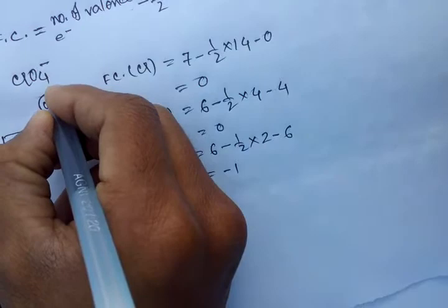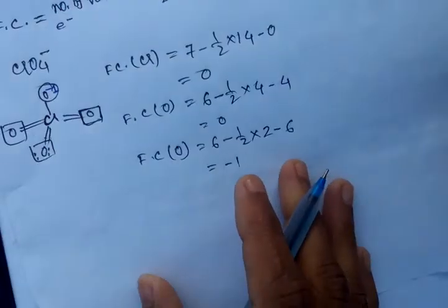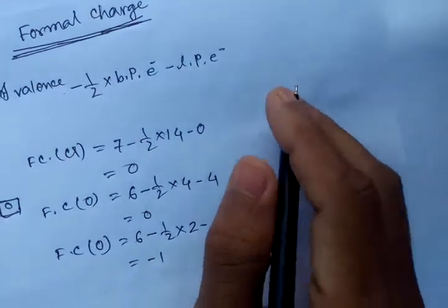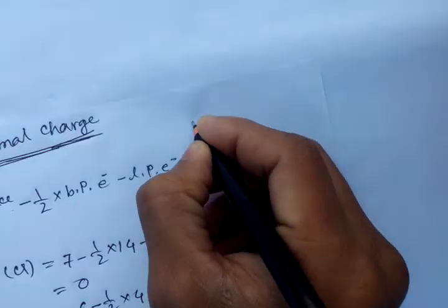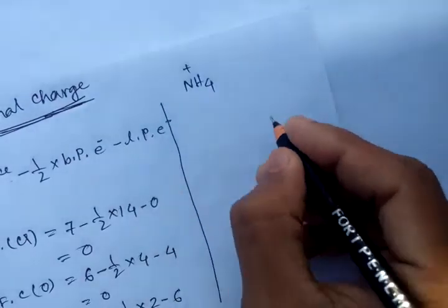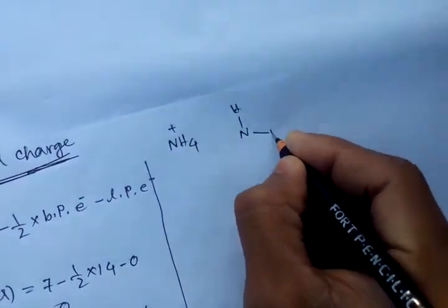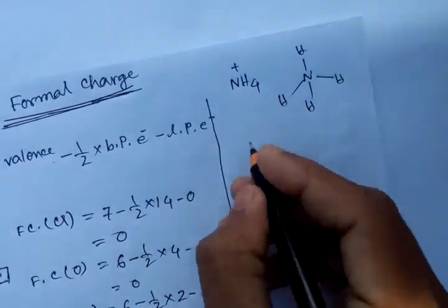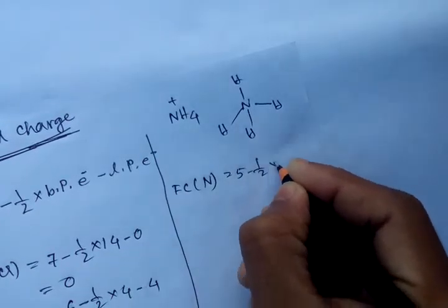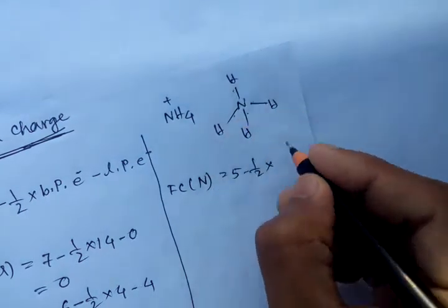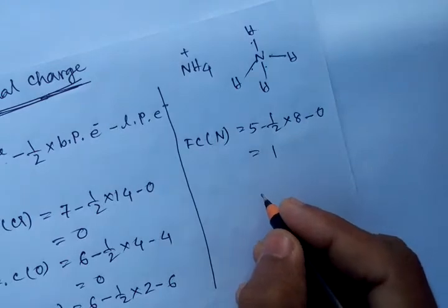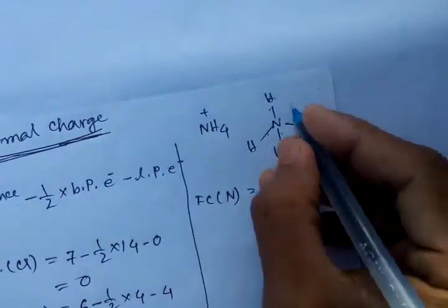This oxygen atom carries a minus one negative charge — that is its formal charge. Now let's calculate formal charge for another compound: NH4 plus (ammonium). The formal charge of the nitrogen atom is: valence electrons of nitrogen five, minus half times bonded electrons — two, four, six, eight — so half of eight equals four, minus lone pair zero, equals one.